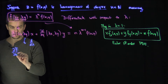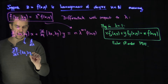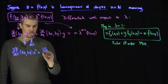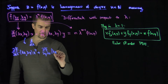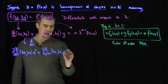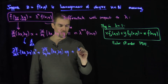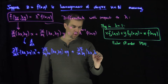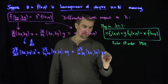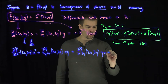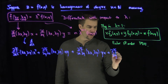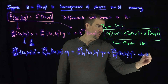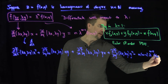Differentiating again, on the left-hand side we get: partial squared f over partial x squared at (lambda x, lambda y) times x squared, plus partial squared f over partial y partial x at (lambda x, lambda y) times xy, plus partial squared f over partial x partial y at (lambda x, lambda y) times xy, plus partial squared f over partial y squared at (lambda x, lambda y) times y squared. On the right-hand side we get n times (n minus 1) times lambda to the n minus 2 times f(x, y), where n must be greater than 2 for this to make sense.